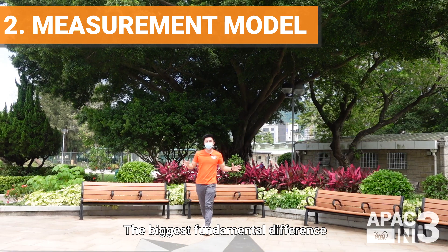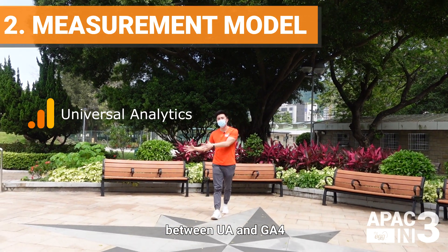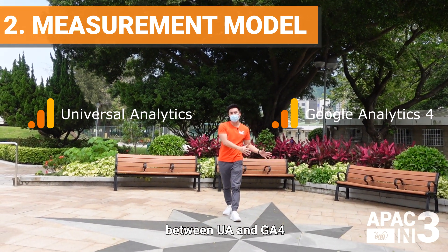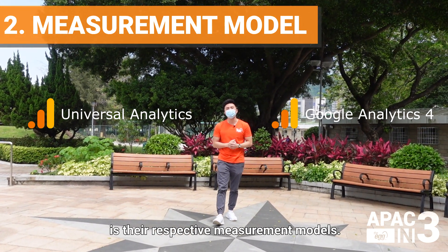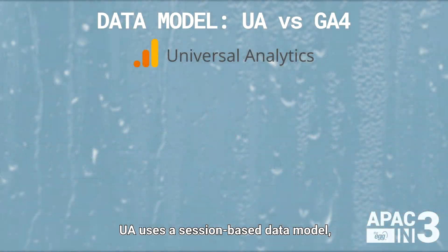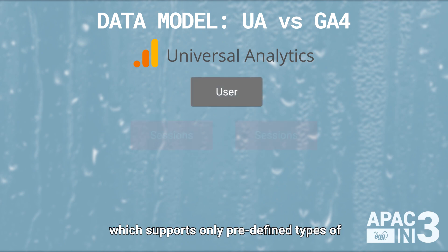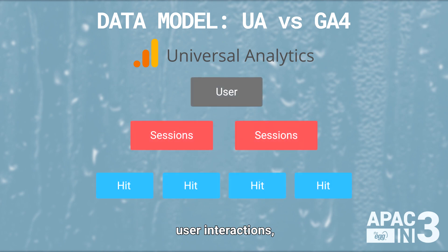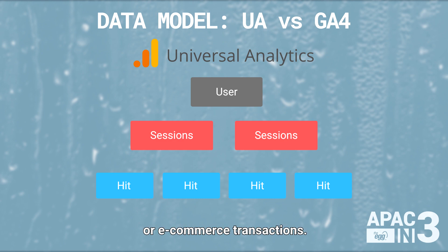The biggest fundamental difference between UA and GA4 is their respective measurement models. UA uses a session-based data model, which supports only predefined types of user interactions like page views, events, or e-commerce transactions.